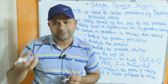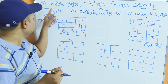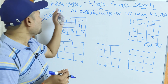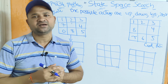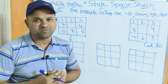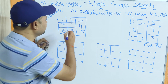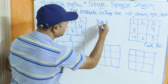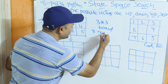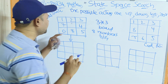Now let us see the 8-puzzle problem for state space search. In an examination, you can also explain chess, tic-tac-toe, or the water jug problem. The 8-puzzle problem uses a 3×3 board — that means 9 cells. Out of 9 cells, we have 8 numbered tiles and 1 tile is empty.